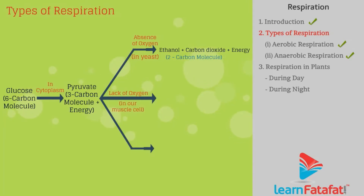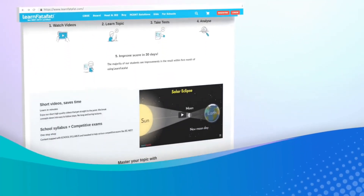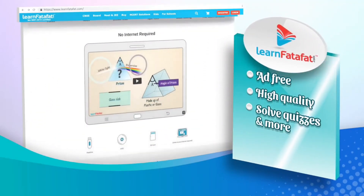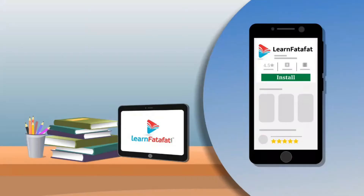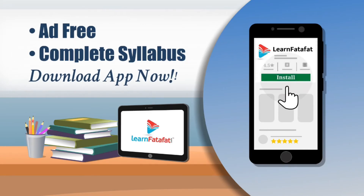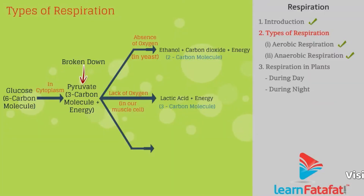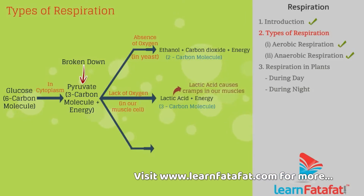Second way: in the absence of oxygen in muscle cells, the pyruvate molecule is broken down to form lactic acid, producing energy. Accumulation of lactic acid causes cramps in our muscles.